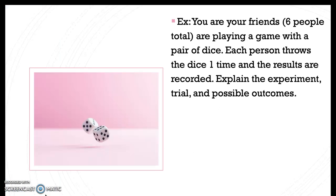So an example: you and your friends, six people total, are playing a game with a pair of dice. Each person throws the dice one time and the results are recorded. Explain the experiment, trial, and possible outcomes.